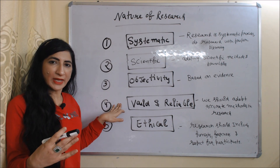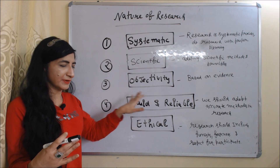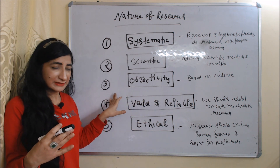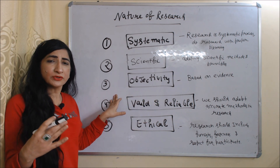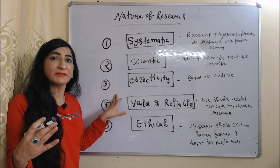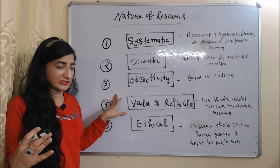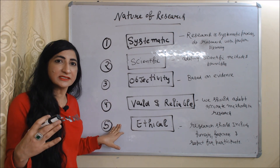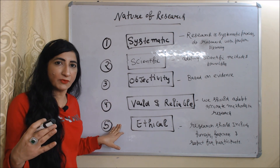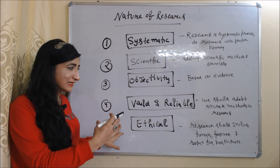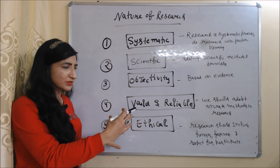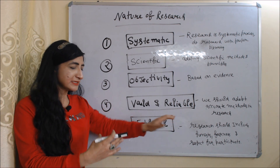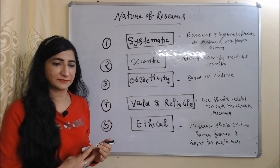It is based on evidence. Next is valid and reliable. Our research should be valid and reliable, which means we should use correct methods in research. Last is ethical. We should conduct research in ethical ways, meaning research should include honesty, fairness and respect for participants.